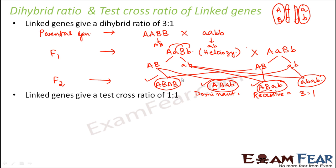Because this, this and this, they are all going to be dominant because the dominant traits, the dominant allele of both the traits are present here. And this is going to be recessive. So this is 1. So 3 is to 1 dihybrid ratio is obtained with linked genes.